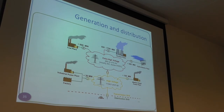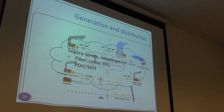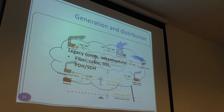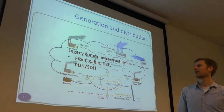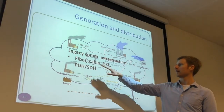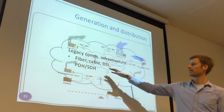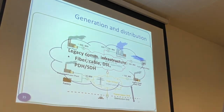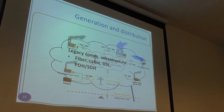At the generation and distribution level, it is typically wired connectivity — well-known, well-established technologies, less IoT-ish. Fiber cable connections, DSL, and traditional wired links operating at very high speed.